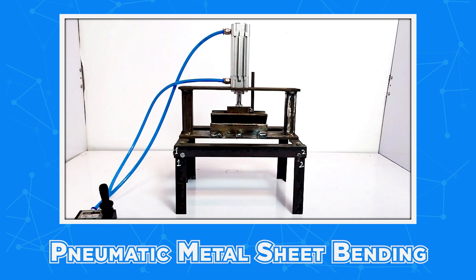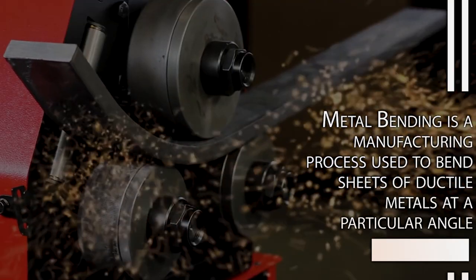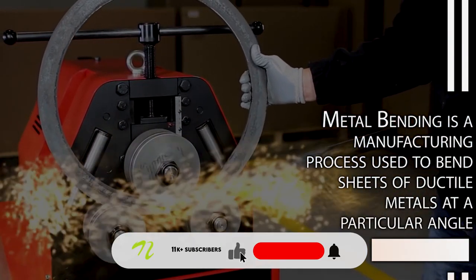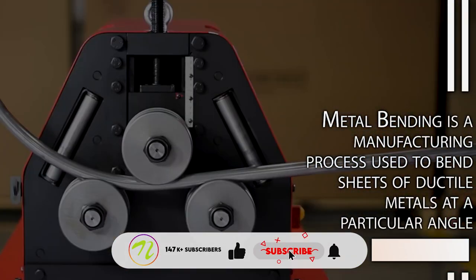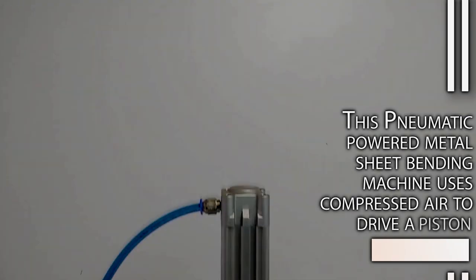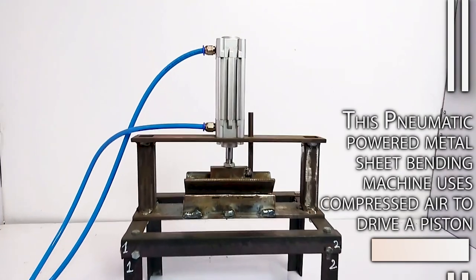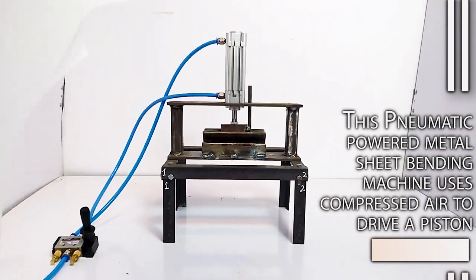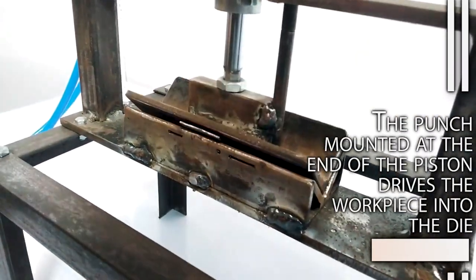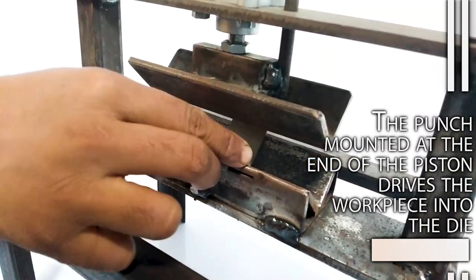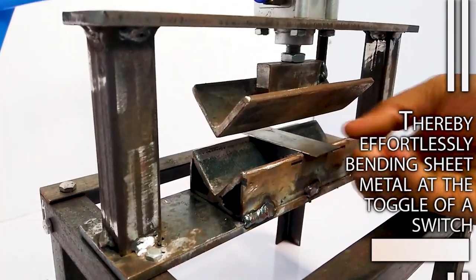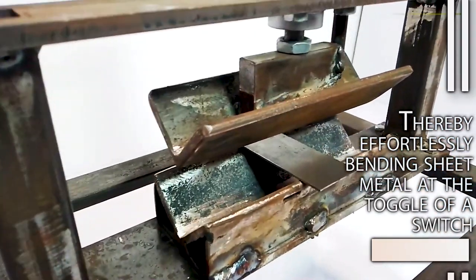Pneumatic metal sheet bending. Metal bending is a manufacturing process used to bend sheets of ductile metals at a particular angle. This pneumatic-powered metal sheet bending machine uses compressed air to drive the piston. A punch mounted at the end of the piston drives the workpiece into the die, thereby effortlessly bending sheet metal at the toggle of a switch.